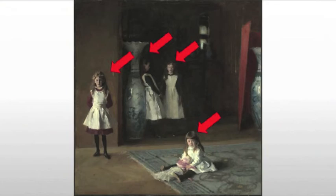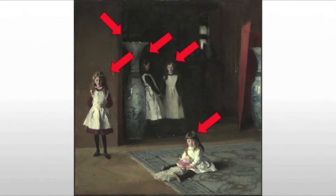The vase is important too. It gives us a sense of the space of the family — obviously they're well off, and we get that from the dress — but the vases stand out, and the delicacy of the vases can be seen as parallel to the delicacy of the girls in the eyes of Sargent.